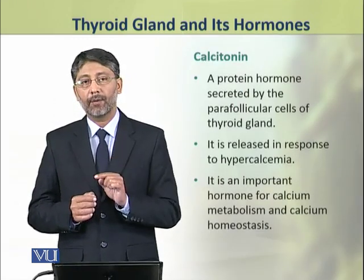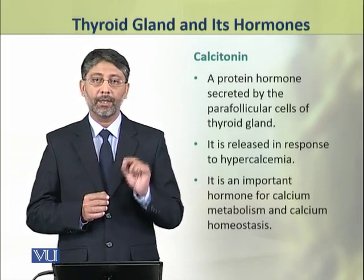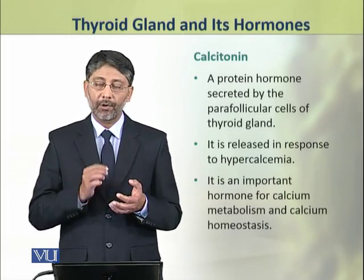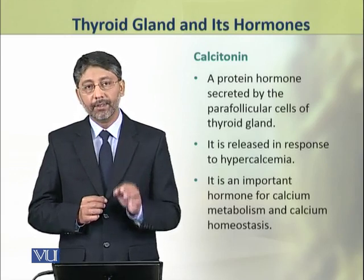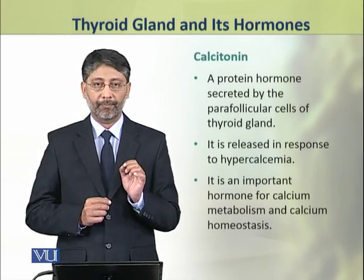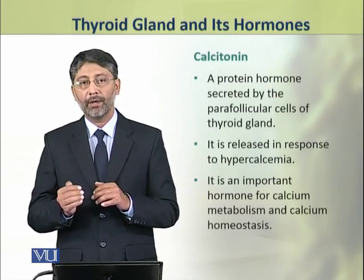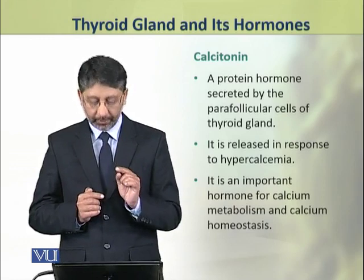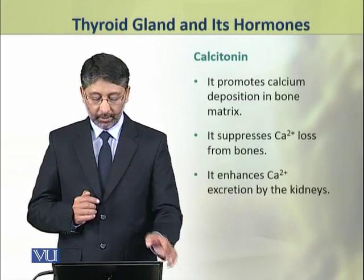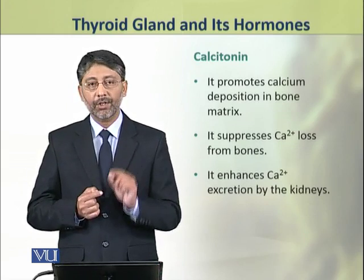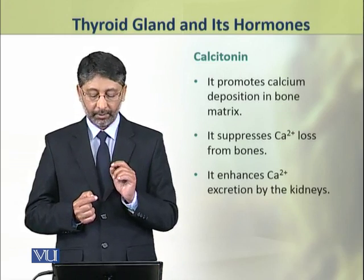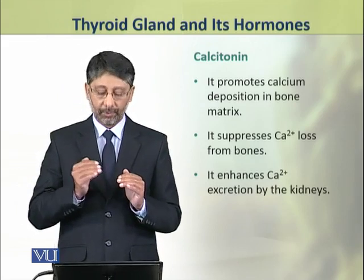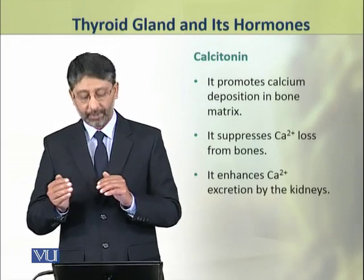The second hormone of the thyroid gland is calcitonin. Calcitonin is a protein hormone secreted by the parafollicular cells of the thyroid. It is released in response to hypercalcemia, that is a high level of blood calcium, and plays a role in calcium homeostasis. Calcitonin promotes calcium deposition in bone matrix, suppresses calcium ion loss from bones, and also enhances calcium ion excretion from the kidneys.